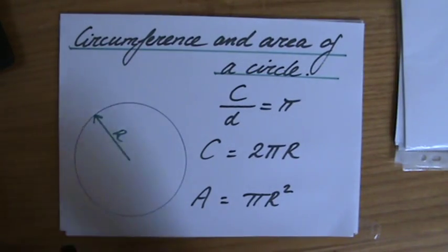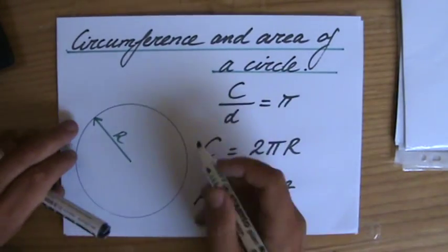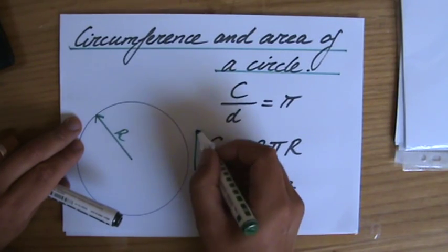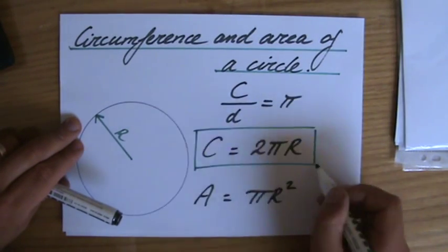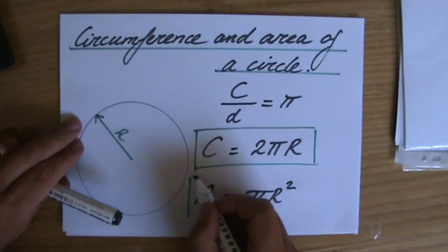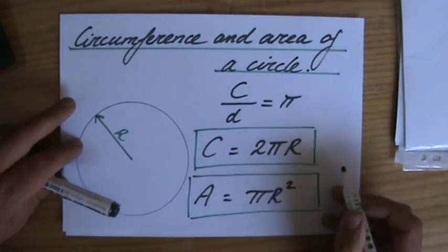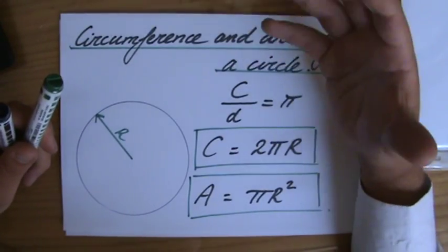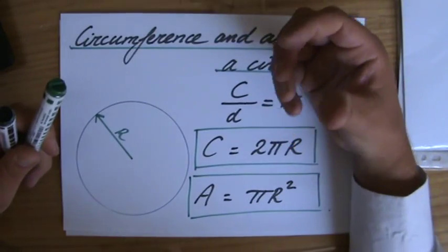The area is pi times the radius squared. Now, these two formulas, the formula for the circumference of a circle, 2 pi r, and the formula for the area of a circle, pi r squared, those are two formulas you just have to remember. You need to know them.